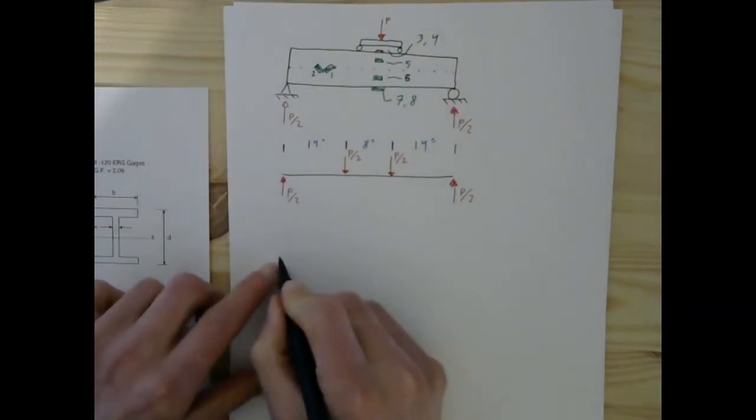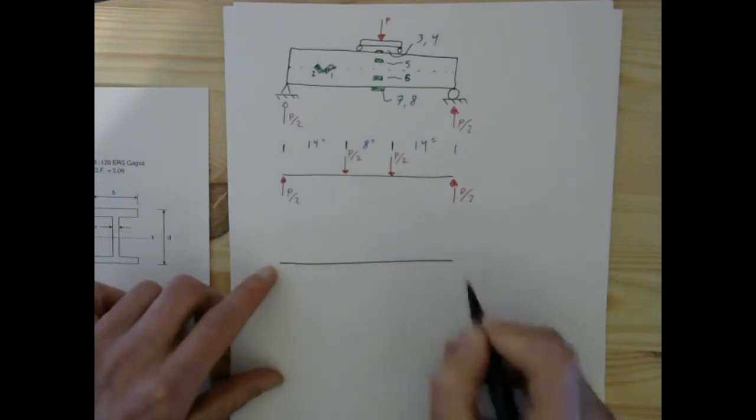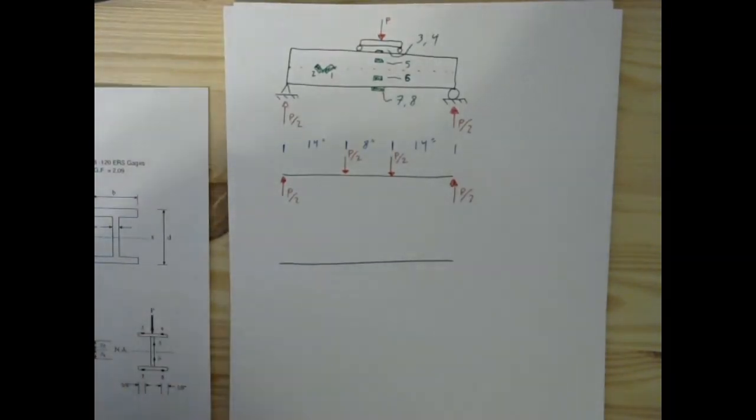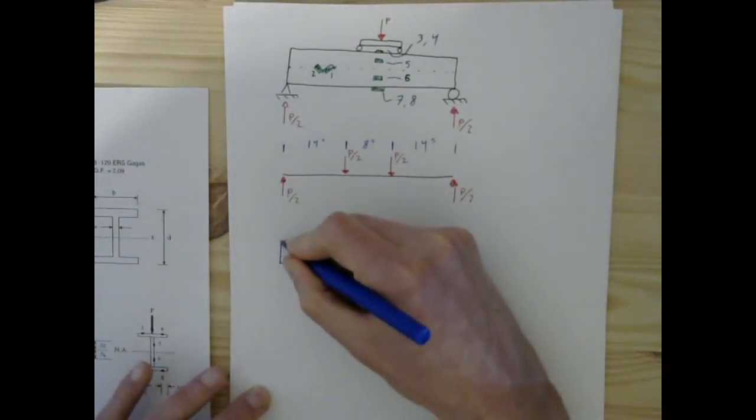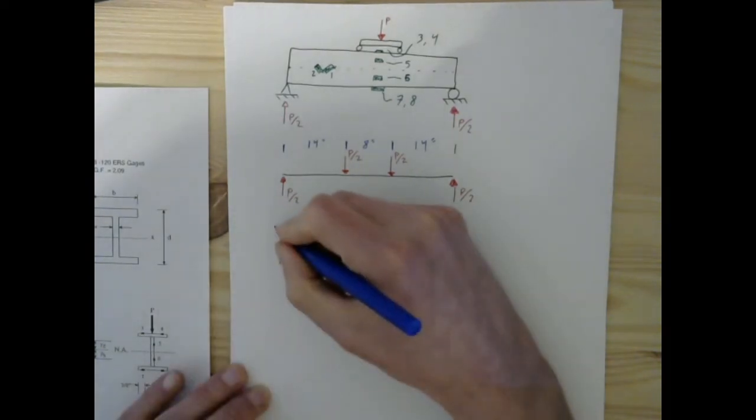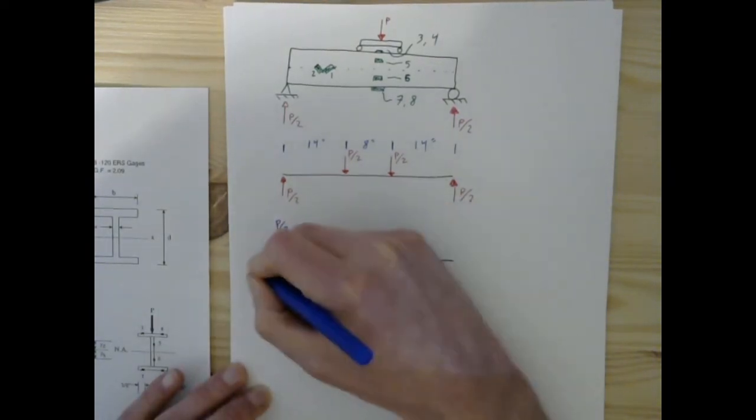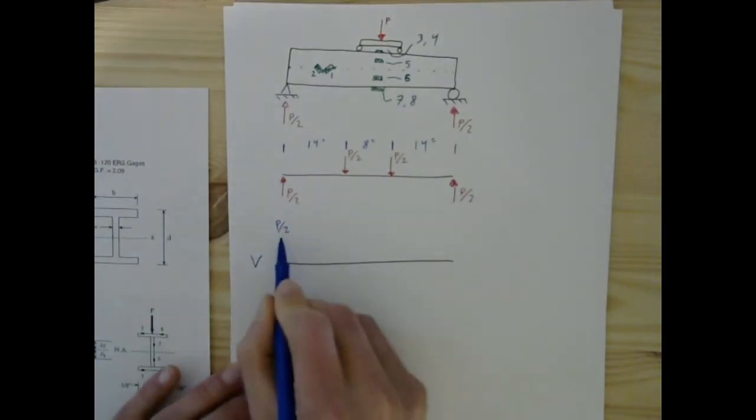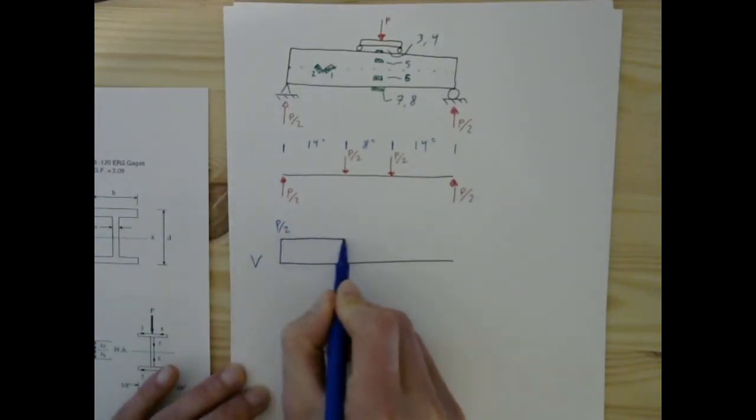This will translate to a shear diagram which is going to pop up at the start because we're going to work left to right. It's P over 2. It's the shear diagram. It's going to continue over here for 14 inches.